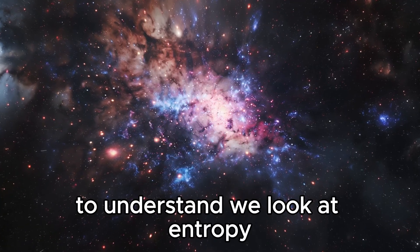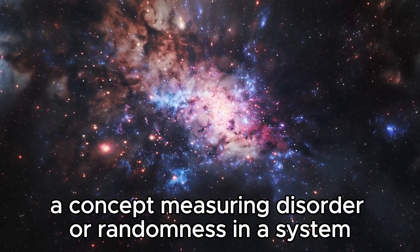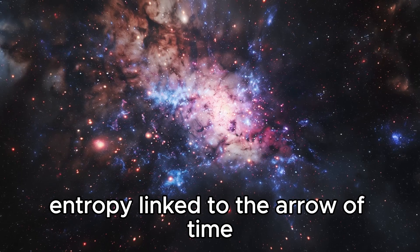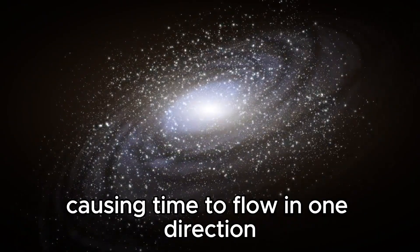To understand, we look at entropy, a concept measuring disorder or randomness in a system. Entropy, linked to the arrow of time, tends to increase over time, causing time to flow in one direction.